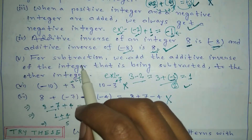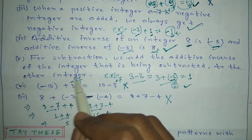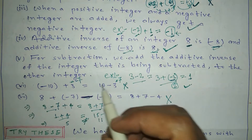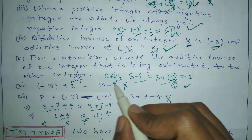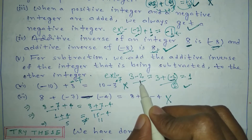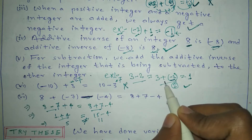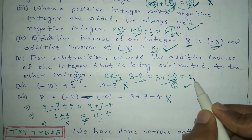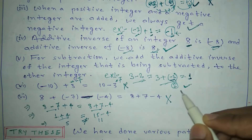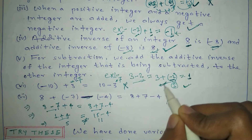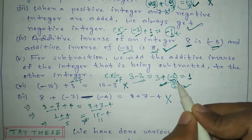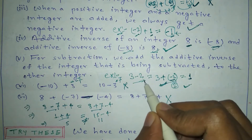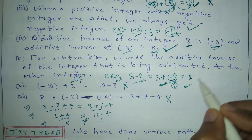For subtraction, we add the additive inverse of the integer being subtracted to the other integer. For example, 3 minus 2 can also be written as 3 plus (minus 2), and both give us 1. Here we are adding minus 2, which is the additive inverse of positive 2, so this point is correct.